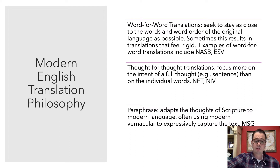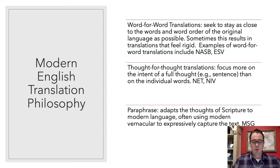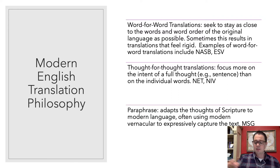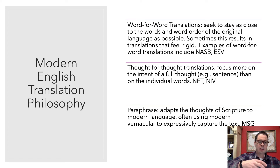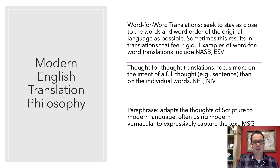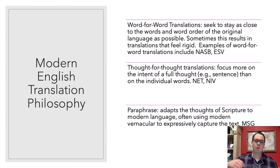Moving on, a thought-for-thought translation says that one-to-one correlation between words may be a good goal, but a better goal is trying to capture the essence of a full thought in one sentence and translate it as a full thought in another. Rather than doing a rigid word-for-word mapping, they take the full thought and try to accurately convey it in a sentence. They're not concerned to say every single time this word occurs in Hebrew or Greek, we'll translate it with exactly the same English word — as long as they capture the essence of the thought, they're satisfied.